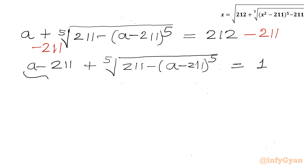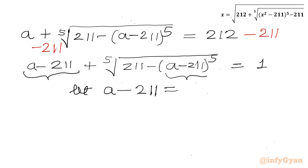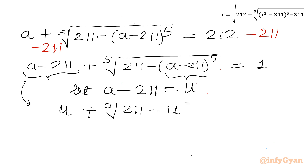You can see a − 211 appearing. Let us substitute a − 211 = u. So our equation becomes u + fifth root of (211 − u) whole power 5 = 1.